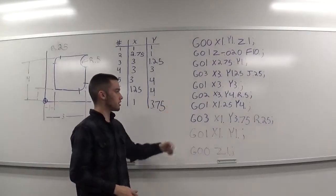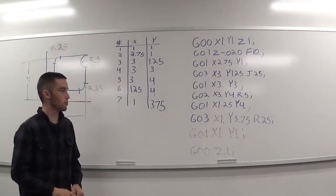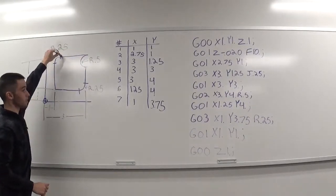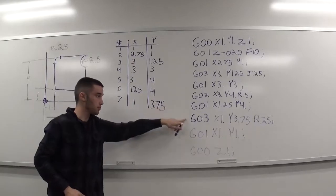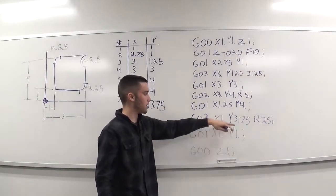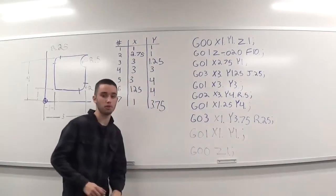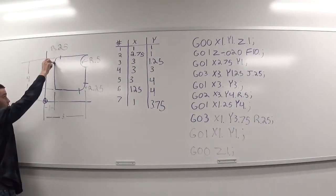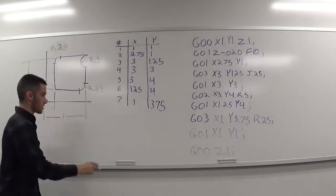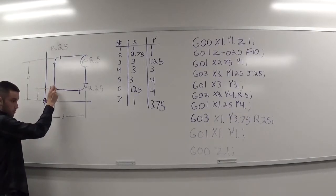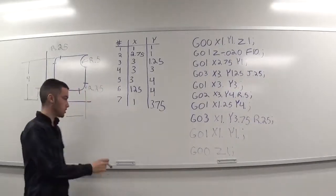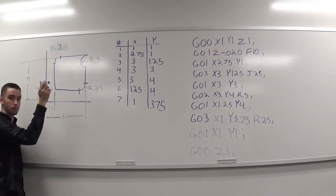Then, we'll be going to G01 with an x of 1.25 and a y of 4, bringing us to right here. Calling up a G03, using the R method for this one again. We have an x of 1 and a y of 3.75 and a radius of 0.25. It's going here to here. And back to G01, bringing us back to the end, completing the contour. X of 1, y of 1. And doing G00, z of 1 inch.